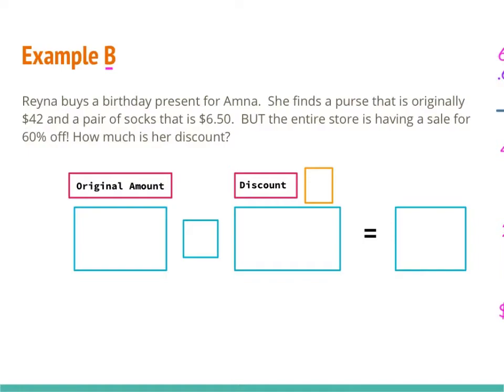First I've got to figure out what my original amount is. The problem is she's buying more than one thing — a purse for $42 and a pair of socks for $6.50. When we go to buy more than one thing in the store, we take everything to the counter at once and add those together before we pay. So we're going to take $42 plus $6.50. When I do that in my calculator, I get $48.50. That's my original amount, so I'm going to place that in the original amount box.